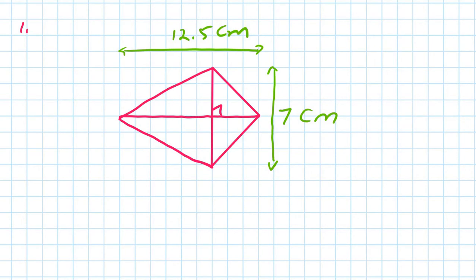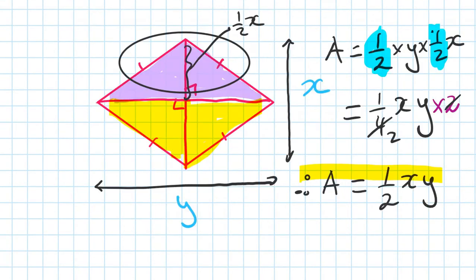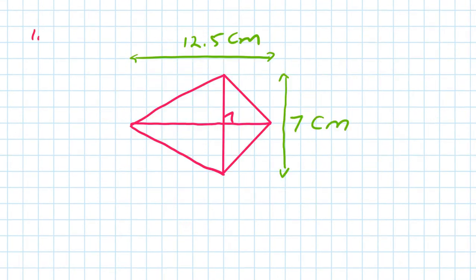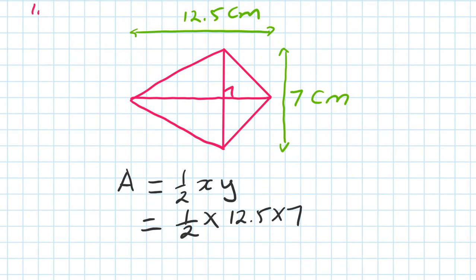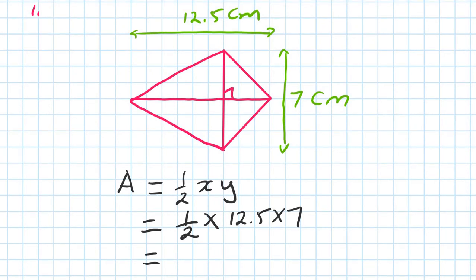Let's do this now. This shape is a kite. Remember, area of a kite is a half xy — a half of both diagonals times together — which equals a half times 12.5 times 7. Using your calculator you should get 43.75 centimeters squared.